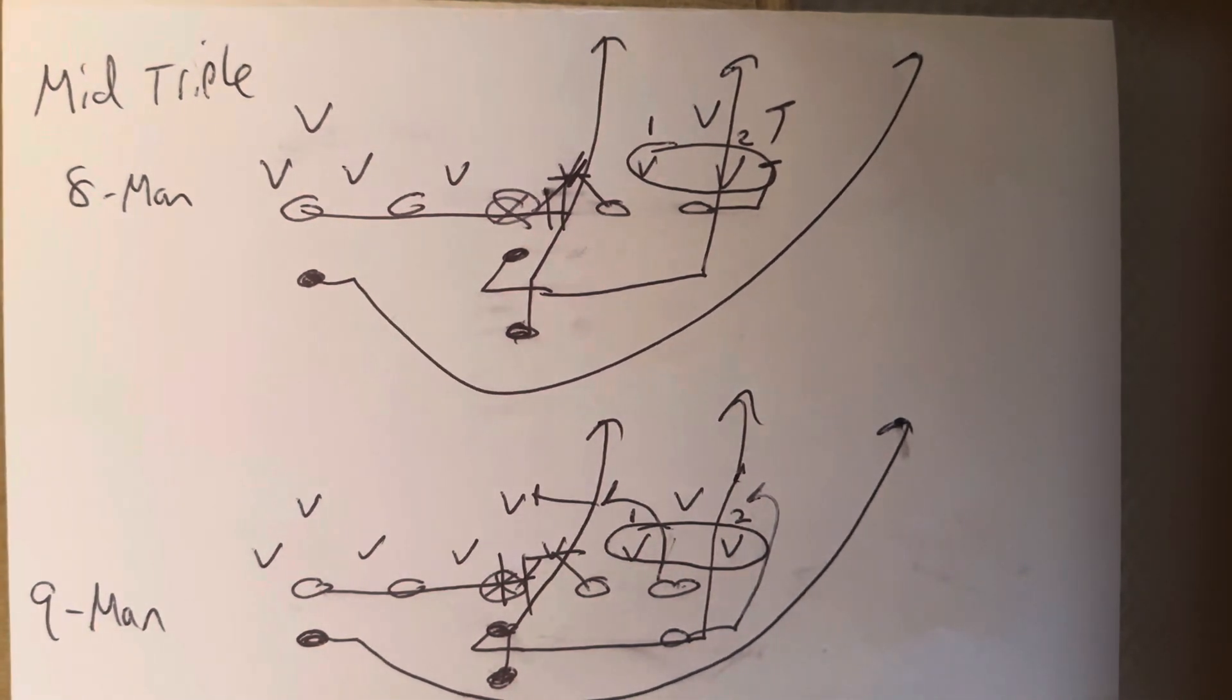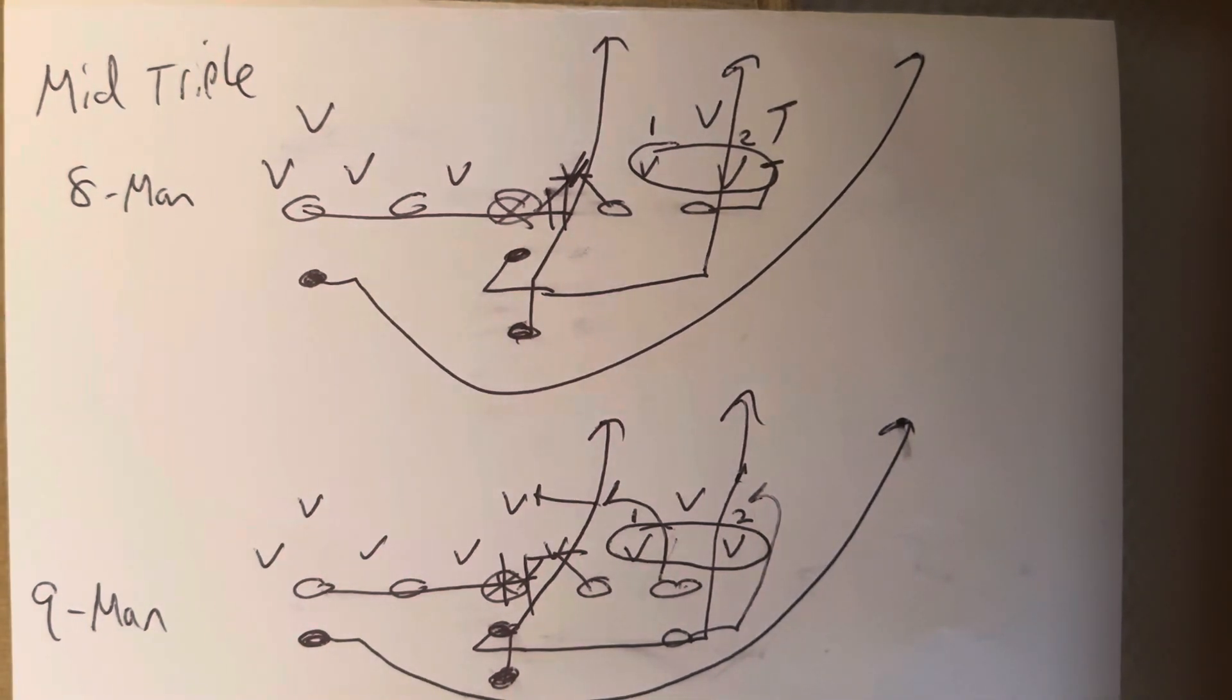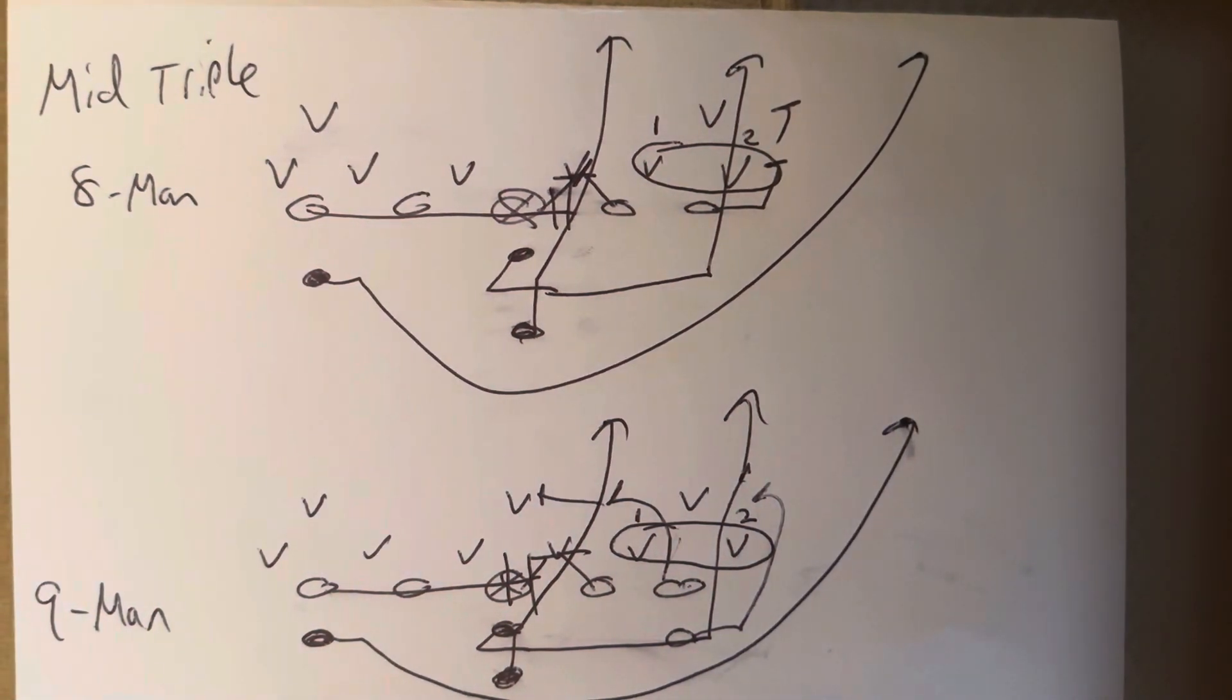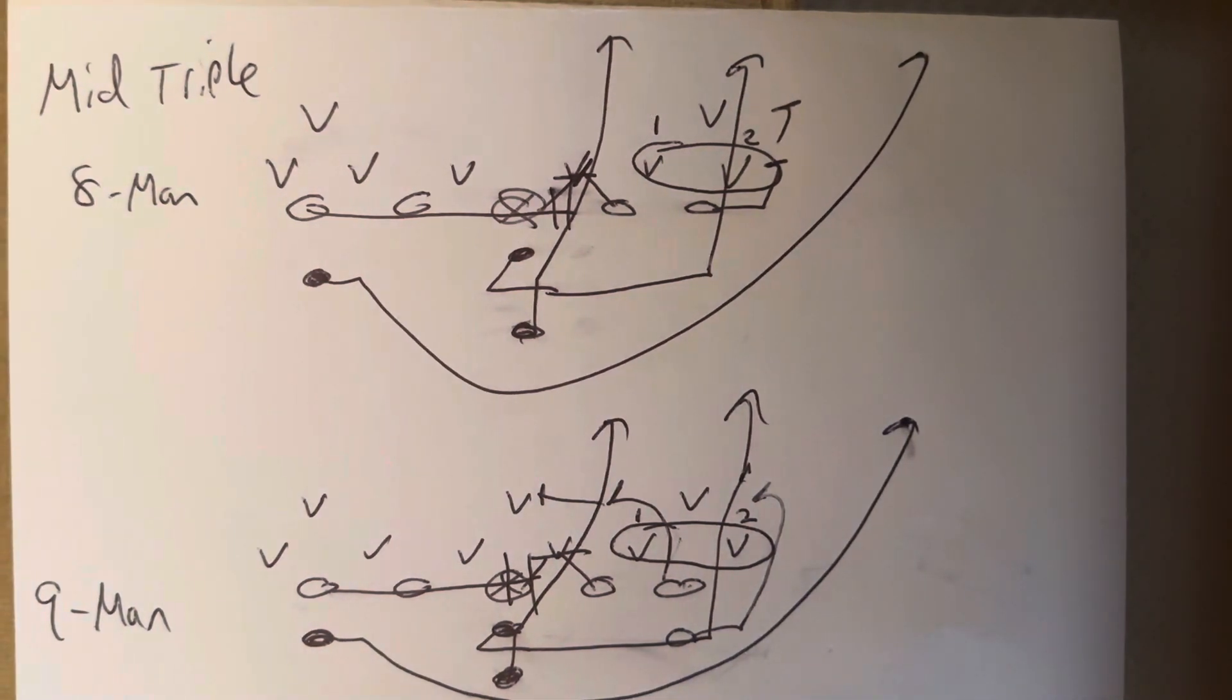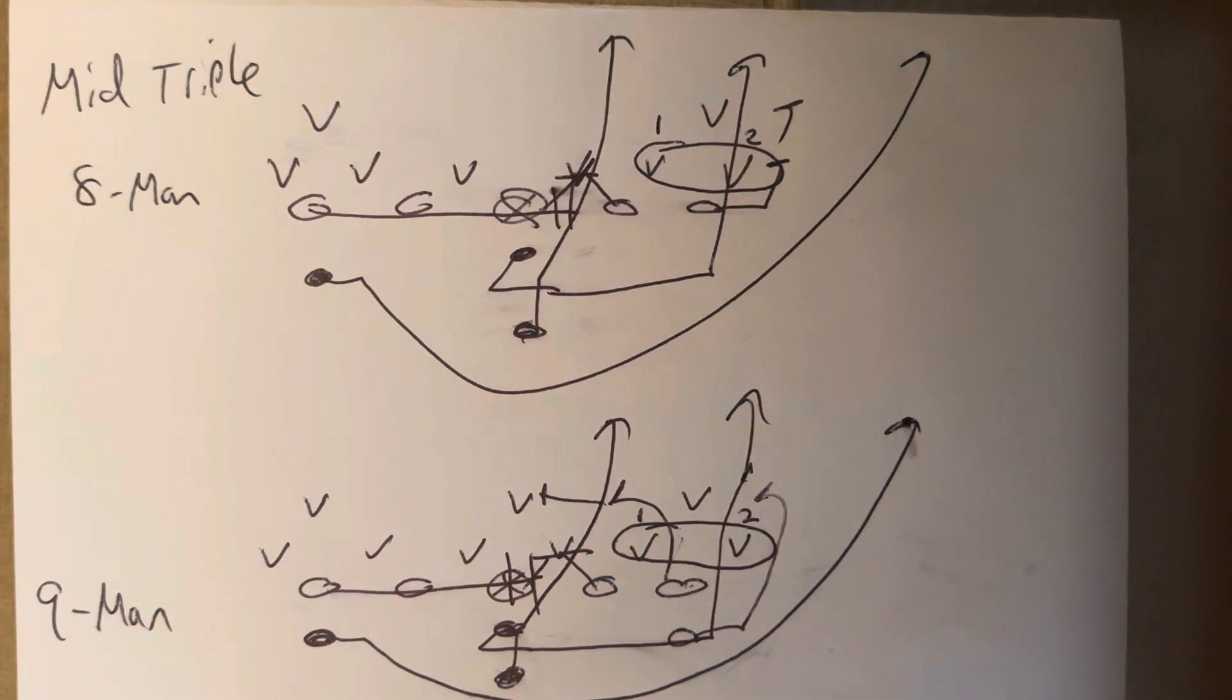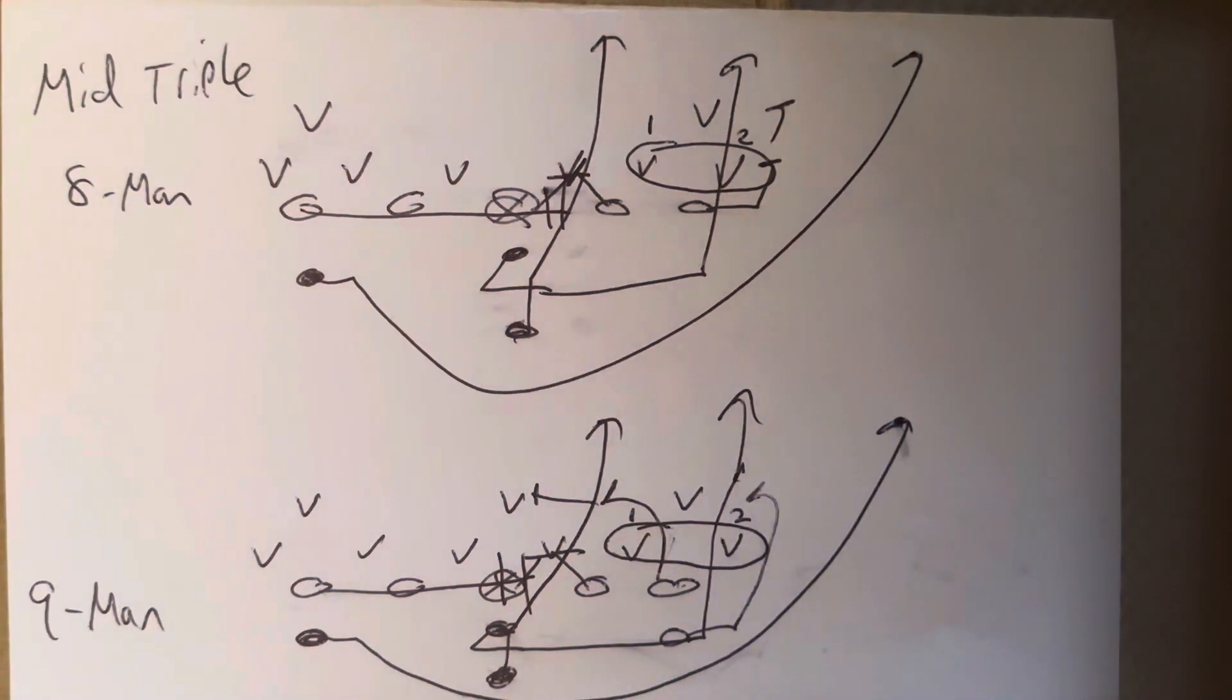Everything else is the same. Okay, so the A-back is the one who will block the run support at nine-man. The end will do it in eight-man because you don't have a play-side A-back. But the beauty is you have one less player in eight-man. So it naturally changes everything on midline triple because of the one extra player and the one lack thereof for the defense. That's the beauty of the triple option offense in eight-man and nine-man football.